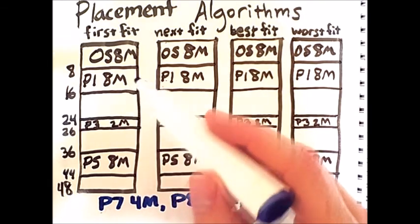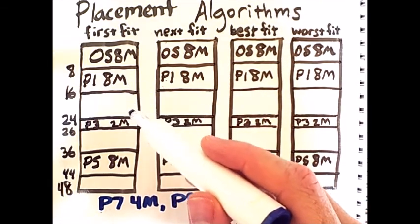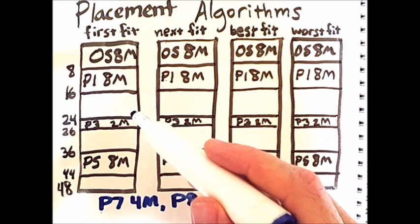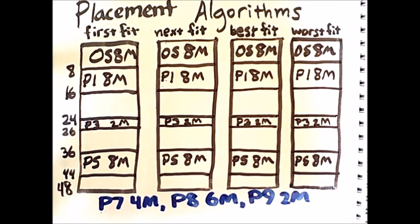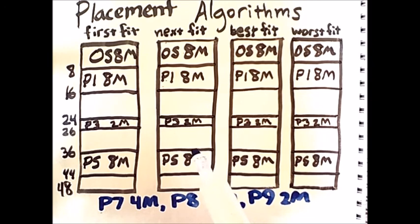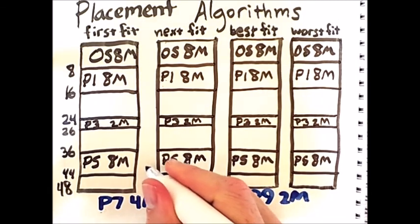First fit simply scans memory from the top until it finds a chunk of memory that can store the amount of space requested by the process. Next fit is similar, except rather than starting at the beginning of memory every time, it will always start at whatever position the last allocation occurred. Therefore, for the sake of these examples, we will assume that the last process placed in memory was P5 right here.